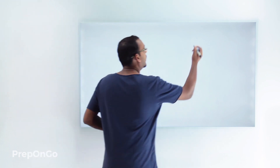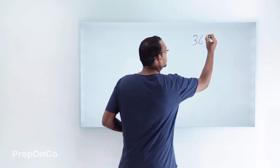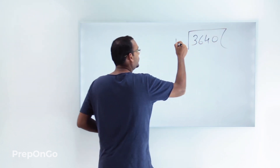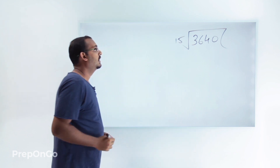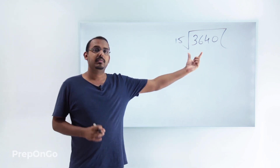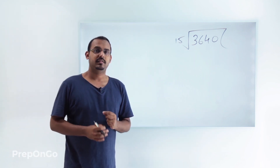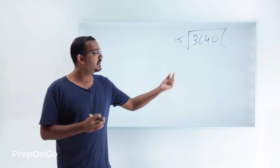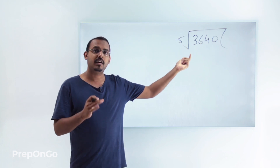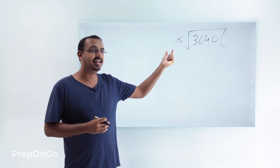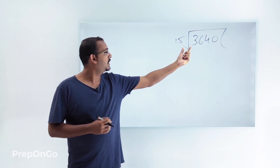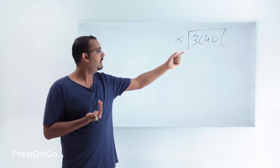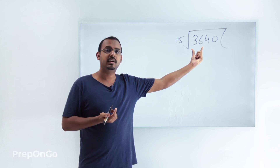Let's take the example of dividing the number 3640 by the number 15. Recall how we do the long division process. We'll first try to divide the first digit of the number by the divisor. Now here we know that 15 does not go into 3, so we'll take one more digit from the dividend to get the number 36.